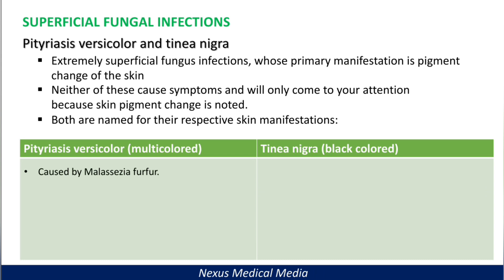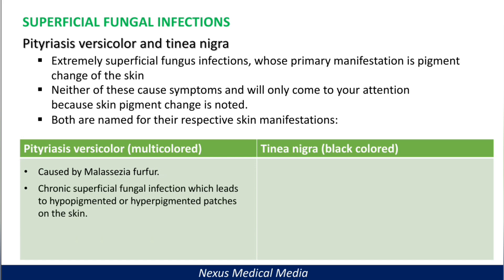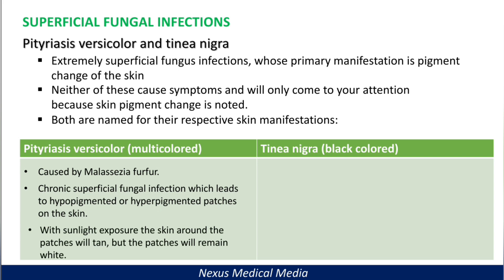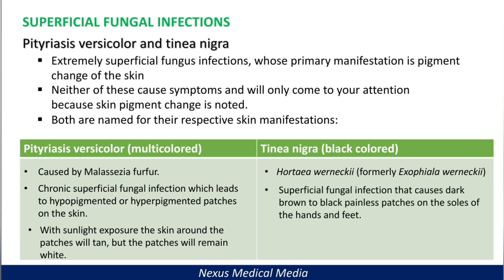Pityriasis versicolor is caused by Malassezia furfur. This is a chronic superficial fungal infection which leads to hyperpigmented or hypopigmented patches on the skin. With sunlight exposure, the skin around the patches will tan but the patches themselves will remain white. Tinea nigra, on the other hand, is caused by Hortaea werneckii, formerly known as Exophiala werneckii, and causes dark brown to black painless patches on the palms of the hands or the soles of the feet.